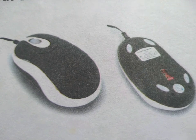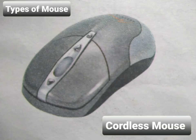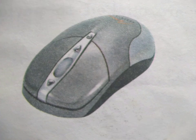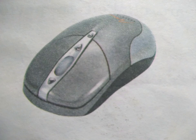The third type is cordless mouse. Cordless means wireless. You can see in the picture, this one is cordless mouse. It has no cord to connect to the computer. It connects to your computer with the help of radio signal.